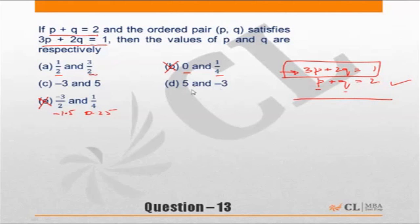So let me put 5 and minus 3 first. If we have 3p plus 2q, we want it to be equal to 1. If I put p equal to 5, q equal to minus 3, this becomes 15. 2q is minus 6. This equals 9. This is incorrect.